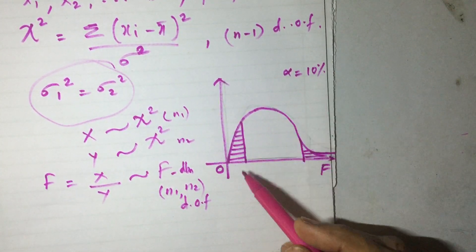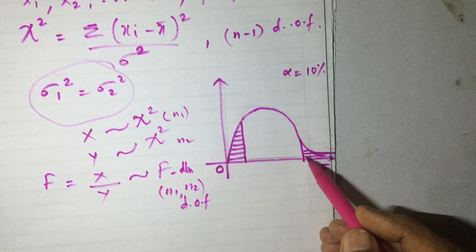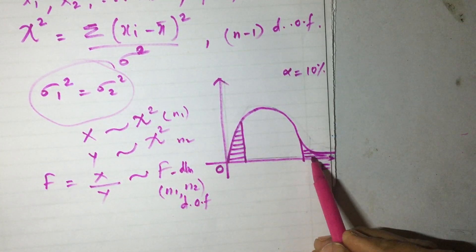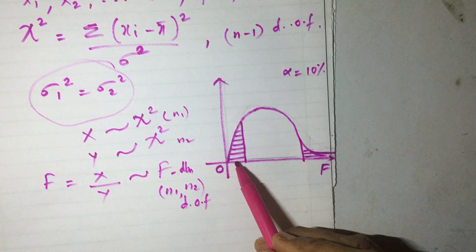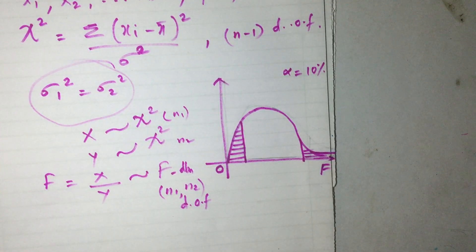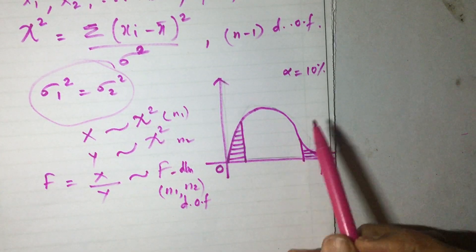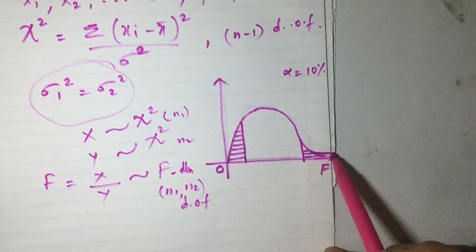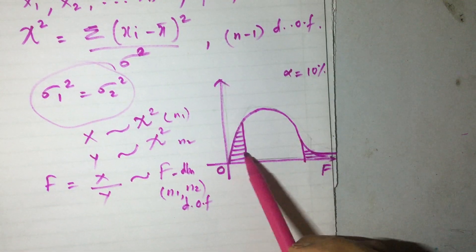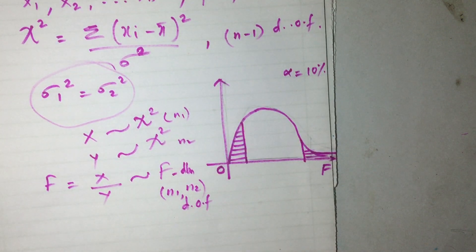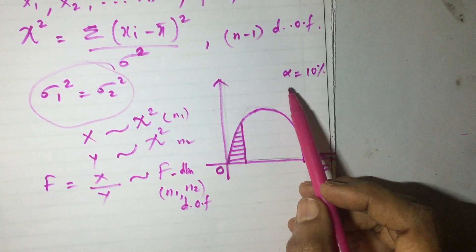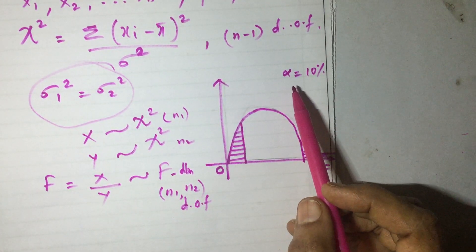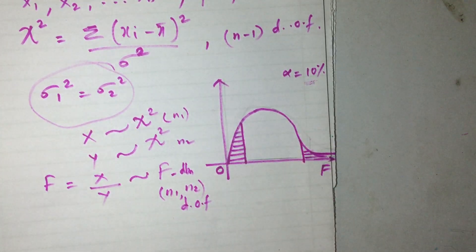If alpha equals 10%, then in a two-tailed test this becomes alpha by 2 in each tail. These two regions are the region of rejection. In a single-tail test, when alpha equals 10%, it is either to the right side or to the left side depending on which tail test we consider. So whenever you are given alpha for a two-tailed test, you take half of that value to find the table value.